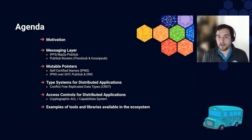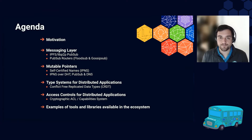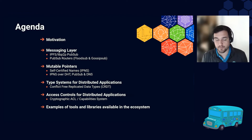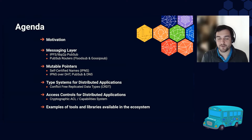Then I'll build up the stack from bottom up that enables that, starting from the messaging layer and explaining our peer-to-peer PubSub protocols. Then going into how to achieve mutable pointers and how to make sure they are secure and authentic. I'll take a tangent and talk about data structures available today that make mutable data a simpler and more powerful construction for distributed applications than centralized ones. I'll also touch on access controls powered by capability systems so we don't need a central point of authority. And I'll end the module by highlighting other toolkits that enable you to build these kinds of apps.